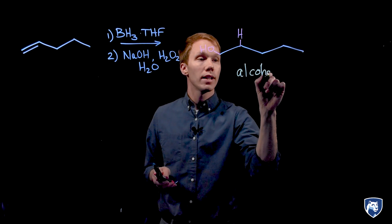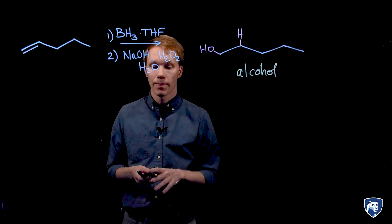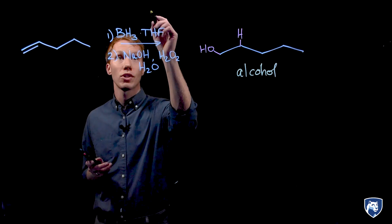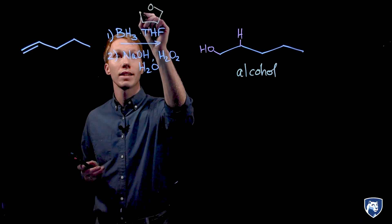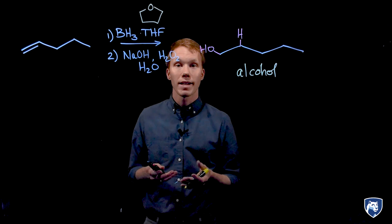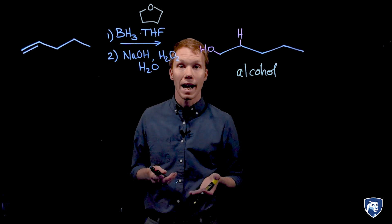This reaction is carried out in two stages. First, we treat our alkene with borane, BH3, in the solvent THF. THF is a cyclic ether with the structure shown here. It serves to stabilize the borane molecule as it is quite reactive.